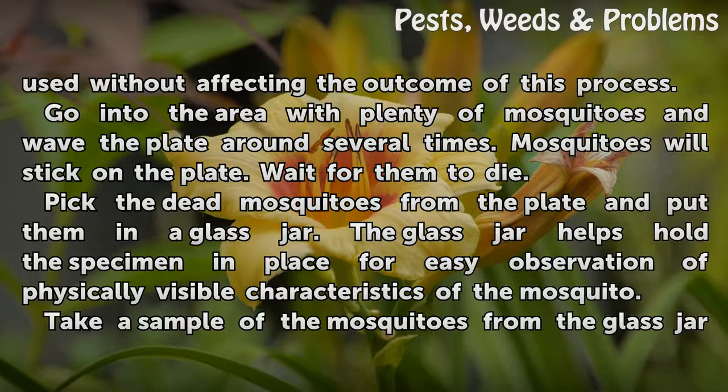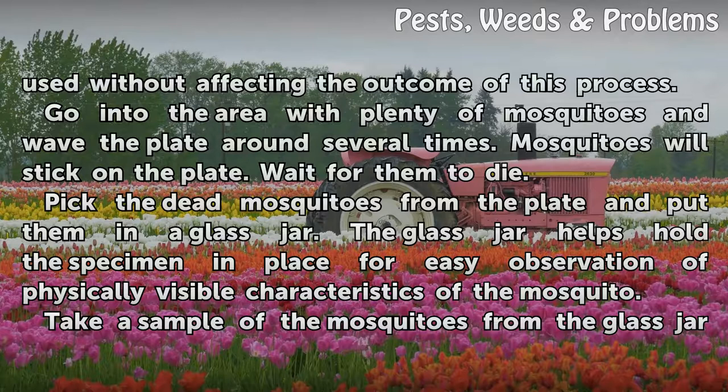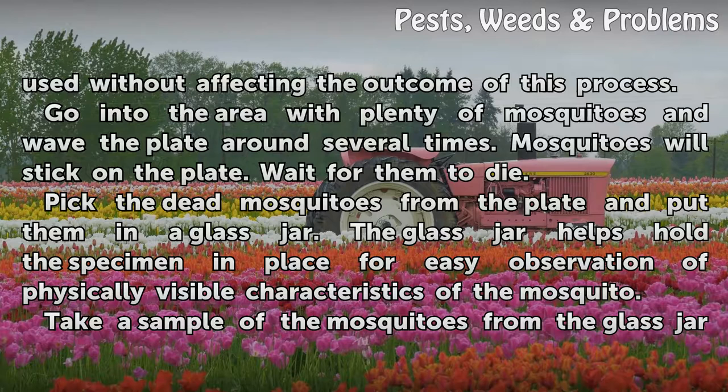Go into the area with plenty of mosquitoes and wave the plate around several times. Mosquitoes will stick on the plate. Wait for them to die. Pick the dead mosquitoes from the plate and put them in a glass jar. The glass jar helps hold the specimen in place for easy observation of physically visible characteristics of the mosquito.